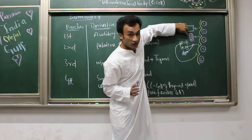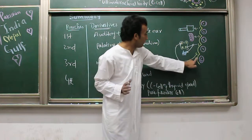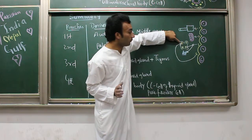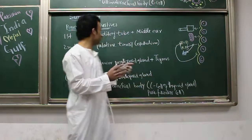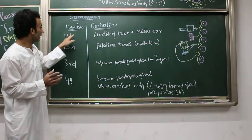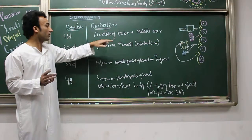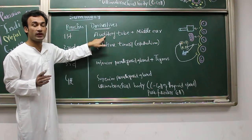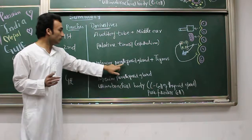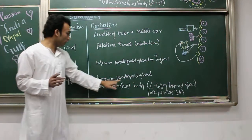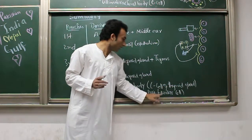The third pharyngeal pouch forms the inferior parathyroid gland and thymus. The fourth pharyngeal pouch forms the superior parathyroid gland and ultimobranchial body — also called C-cells or parafollicular cells. Remember: if there is failure in development of the third pharyngeal pouch, that gives Nezelof syndrome; failure in development of the third and fourth pharyngeal pouches gives DiGeorge syndrome.